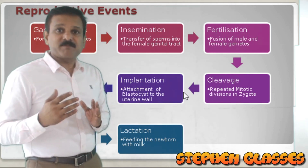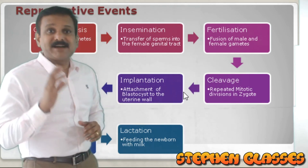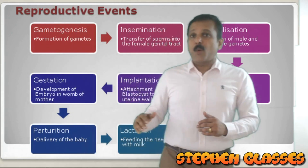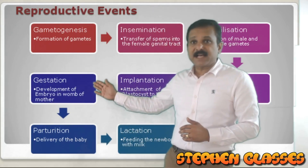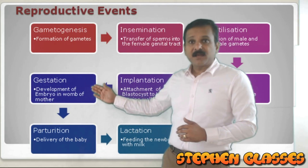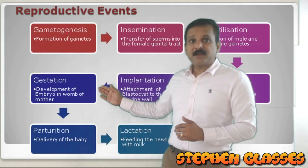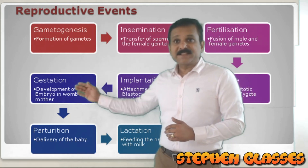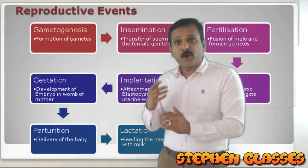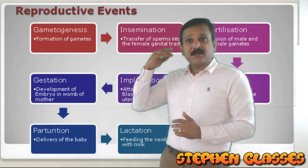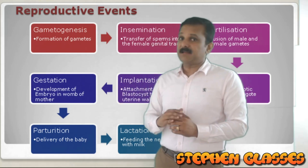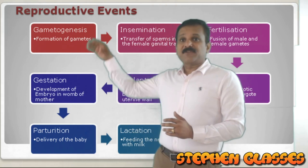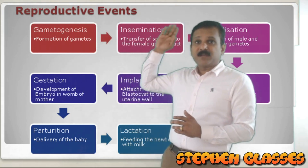After implantation, the embryo will develop in the uterus of the mother. That development of the embryo within the uterus of the mother is termed gestation. The uterus is also called the womb, and inside the womb the embryo will develop — that will take nine months.